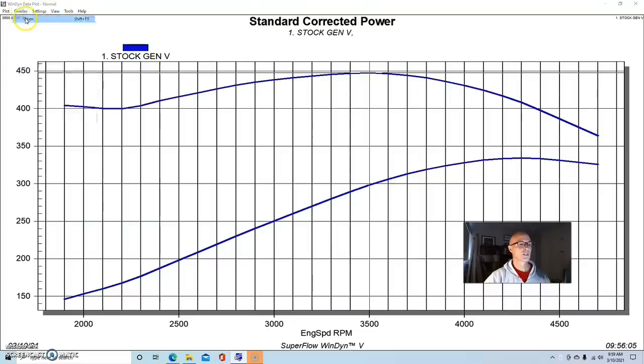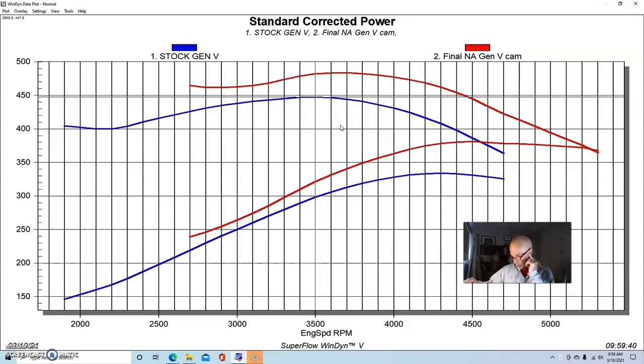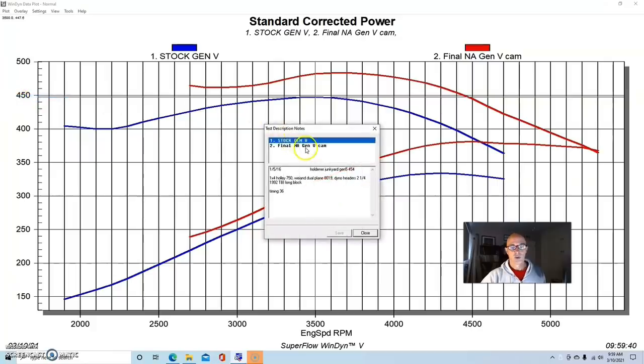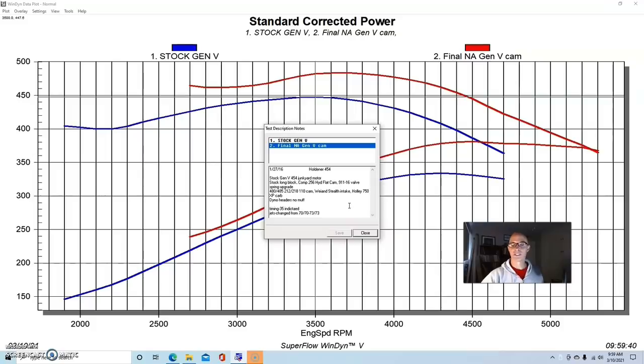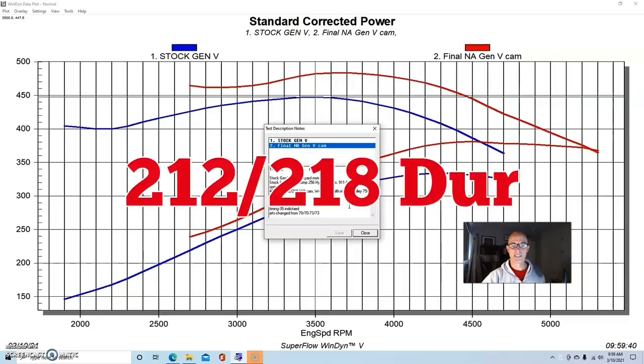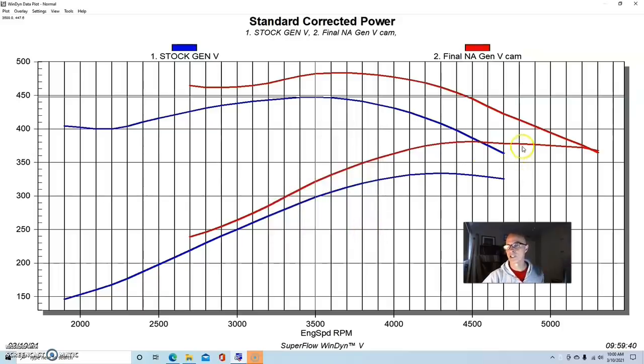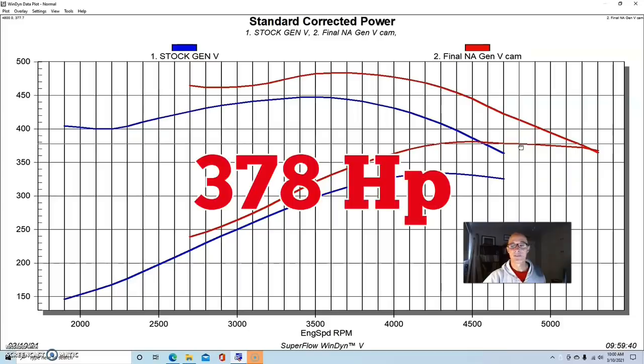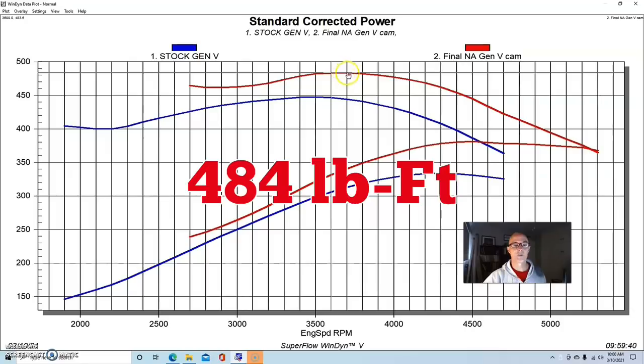Here's what happened when we installed a mild camshaft. We basically picked up power everywhere. This was a Comp Extreme Energy 256 hydraulic flat tappet camshaft. We also upgraded the valve springs. It was a 480-485 lift split, 212-218 degree duration split, and 110 degree lobe separation angle. That pushed power up to 378 horsepower and peak torque was up to 484 foot-pounds.